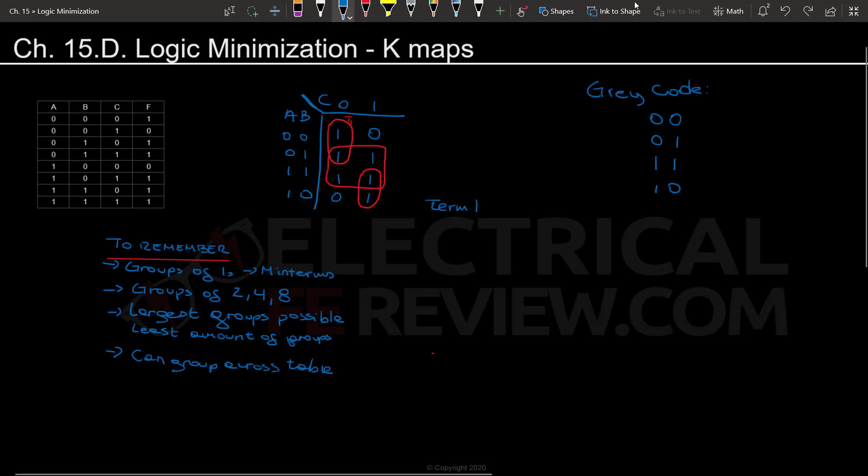So for the first term we are going to consider A because that does not change, and because it is zero it is going to be A naught. And then we are not going to consider B because it is considered redundant. It will result in a B or B naught which is a one. And we are going to consider C which is zero so we can say it's C naught.